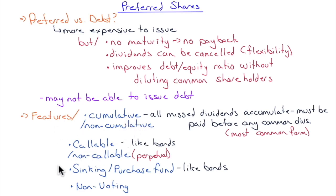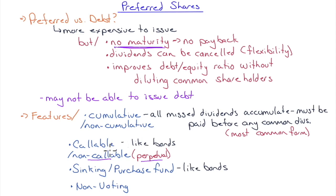Preferred shares can be callable or non-callable, similar to bonds. A non-callable preferred share is called a perpetual preferred share — since there's no maturity and no call feature, it can last forever. They may also have a sinking fund or purchase fund if they have a call feature or some expiration. Preferred shares are non-voting except on issues that pertain specifically to preferred shareholders.